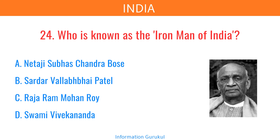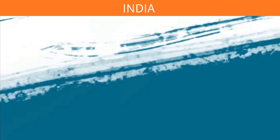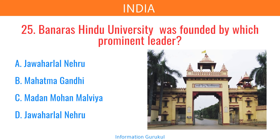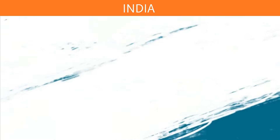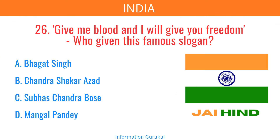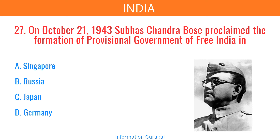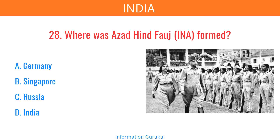Who is known as the Iron Man of India? Sardar Vallabhbhai Patel. Banaras Hindu University was founded by which prominent leader? Madan Mohan Malviya. Who gave the famous slogan, Give me blood and I will give you freedom? Subhas Chandra Bose. On 21st October 1943, Subhas Chandra Bose proclaimed the formation of the Provisional Government of Free India in Singapore. Where was the Azad Hind Fauj formed? Singapore.